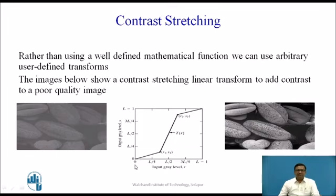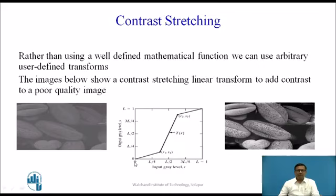This input gray level value varies from 0 to L minus 1. For example, if a pixel in an image is represented by 8 bits, then L minus 1 will be 255 because 2 raised to 8 is 256. Similarly, on the y-axis the output gray level values will also range from 0 to 255.